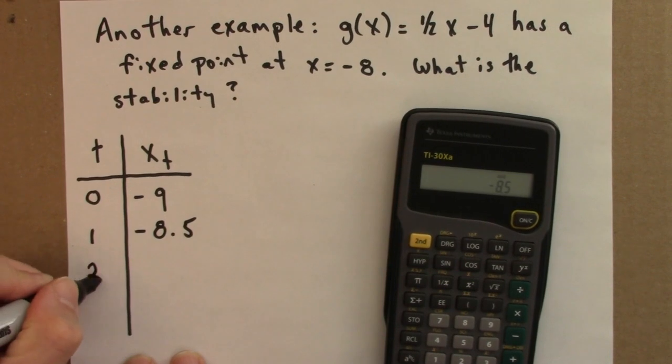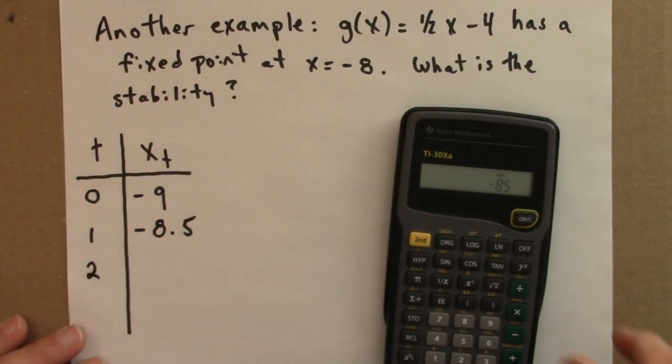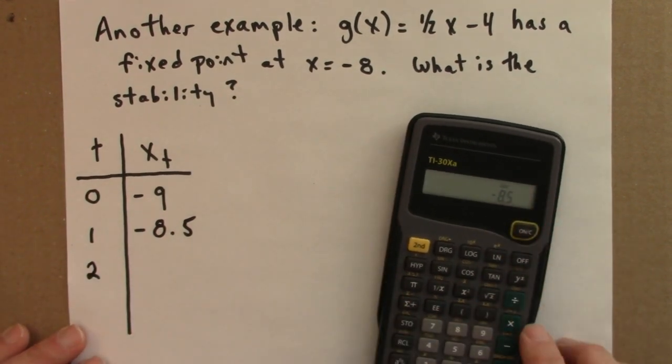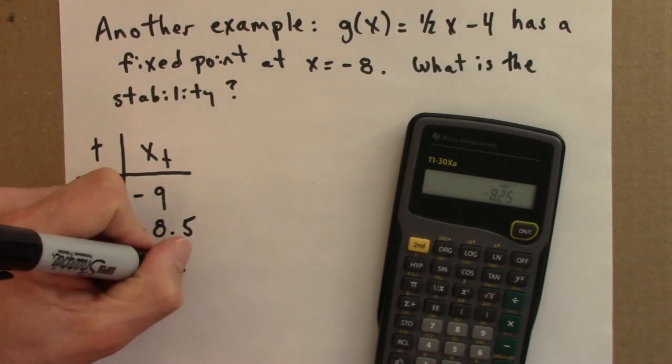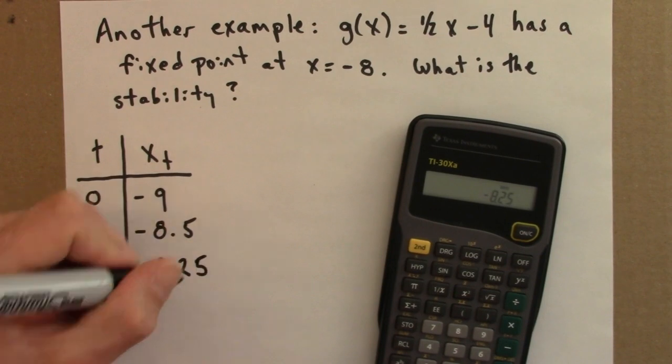What's the next value? I just do the function of that. Iteration is doing the same thing over and over again. Take the value, divide it by 2, subtract 4, minus 8.25.